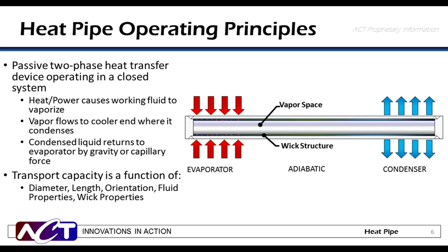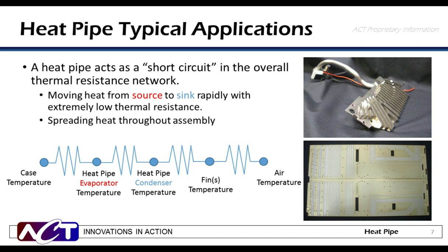A heat pipe is a passive two-phase heat transfer device that operates in a closed loop. Heat generated by components causes a working fluid to vaporize inside the pipe. That vapor flows to a cooler end of the pipe where it condenses, giving off its heat. The condensed liquid is then returned to the evaporative region by gravity and/or capillary forces. The transport capacity of a heat pipe is a function of the diameter, the length, its orientation with respect to gravity, the working fluid properties, and the wick properties.